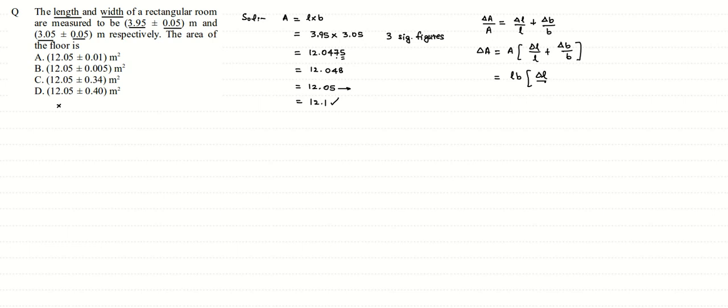If you multiply this inside, this will simplify our calculations. Length into breadth multiplied by delta L by L will give us B into delta L plus this value will come out to be L into B into delta B by B. B and B will cancel. We will get L into delta B. Now we fill the values.